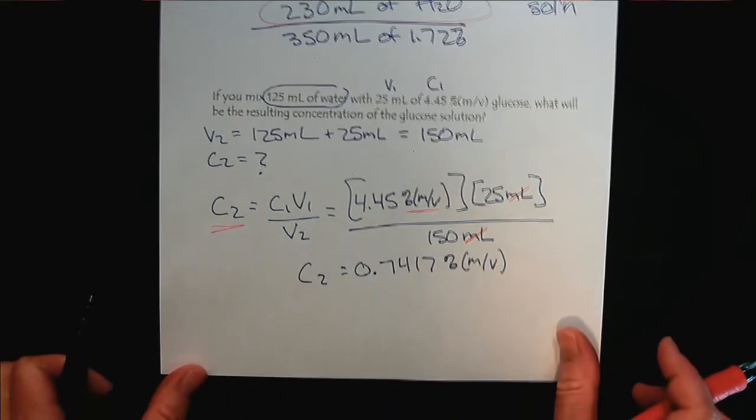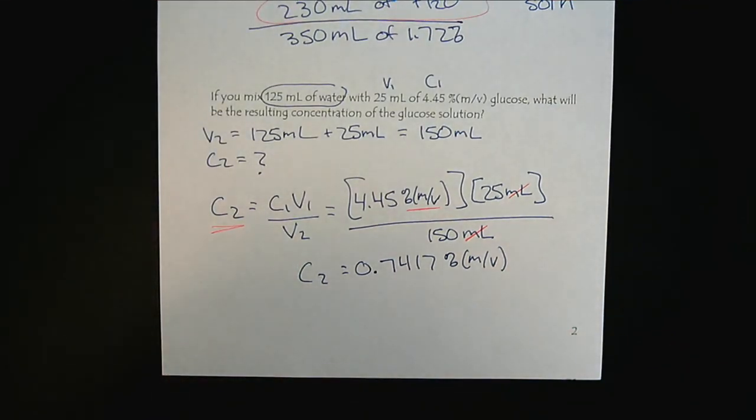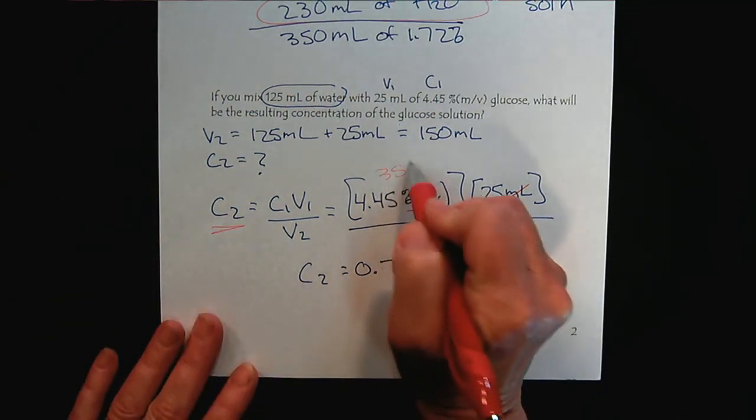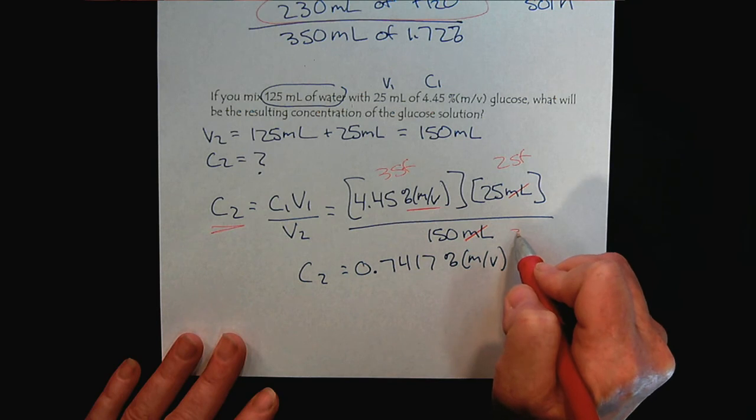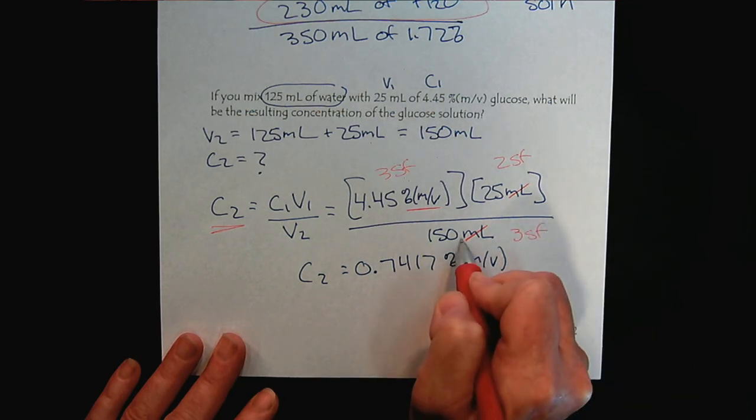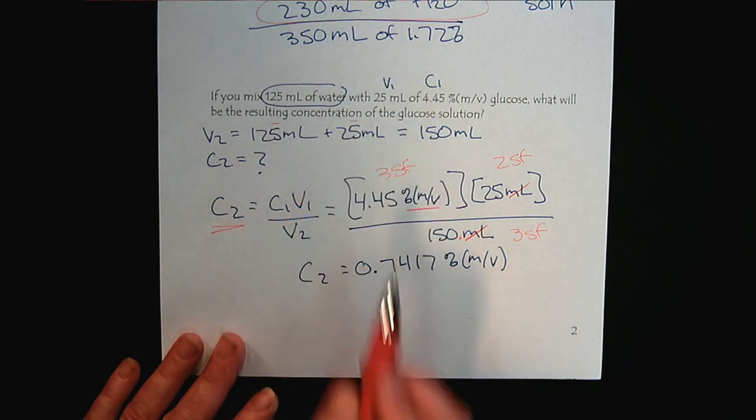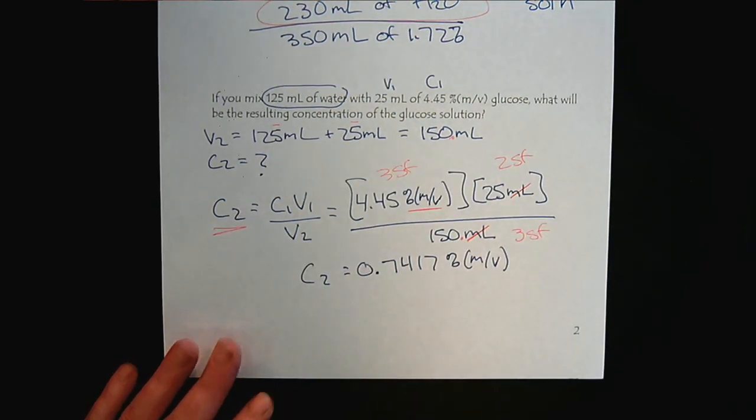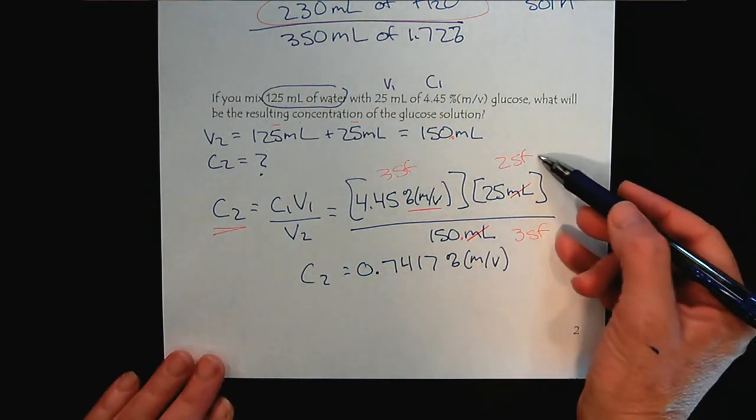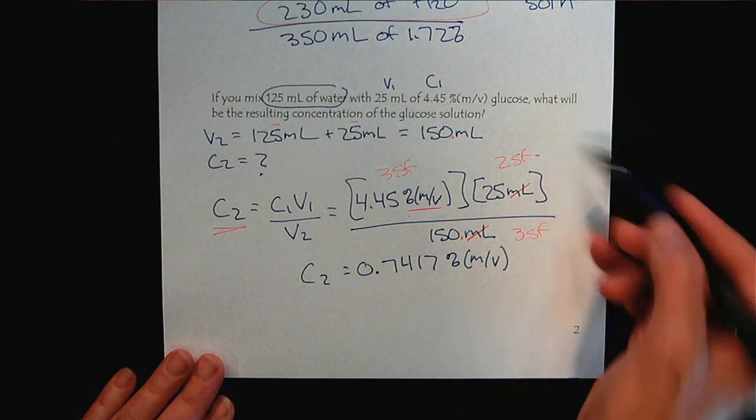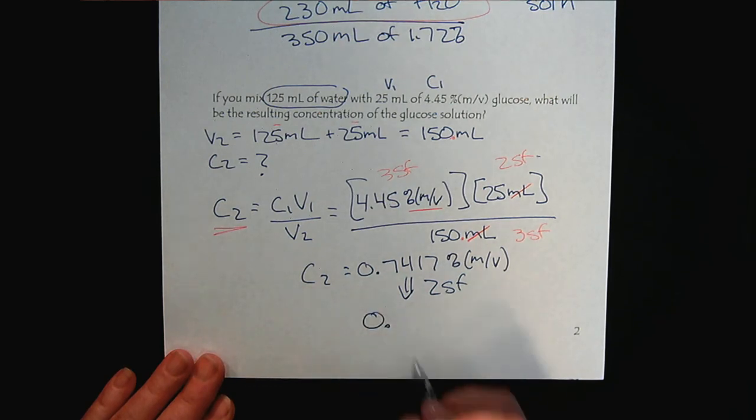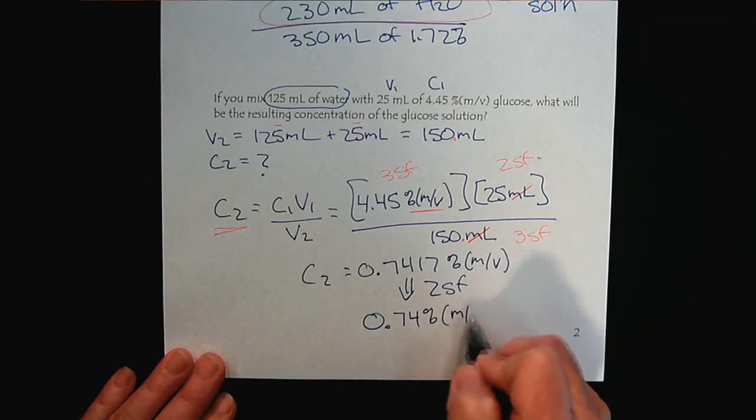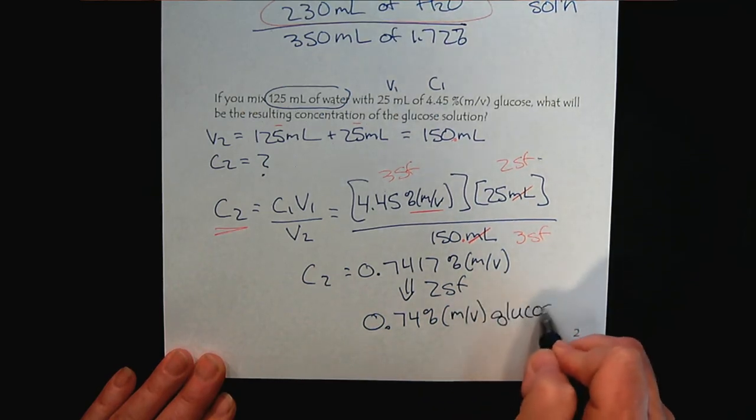Once we finish the calculation, big breath, look back, compare the sig figs of our data. Three sig figs, two sig figs, and this would actually be three sig figs. Because the uncertainty was here and here. I should have put a decimal there. But, remember that our data is always limited by the least accurate and precise. We would round our answer to two sig figs. Leading zeros never count. So, 0.74% mass over volume glucose would be the solution you prepared.